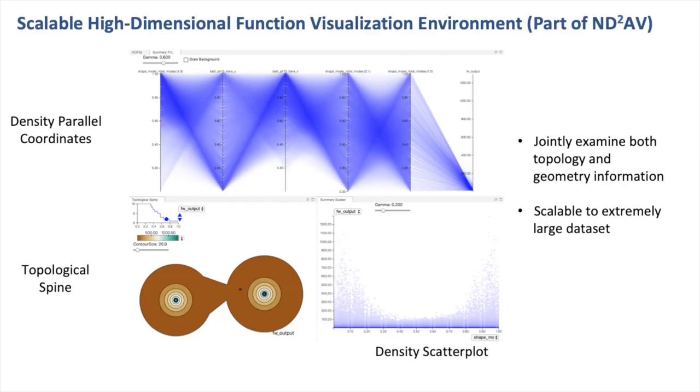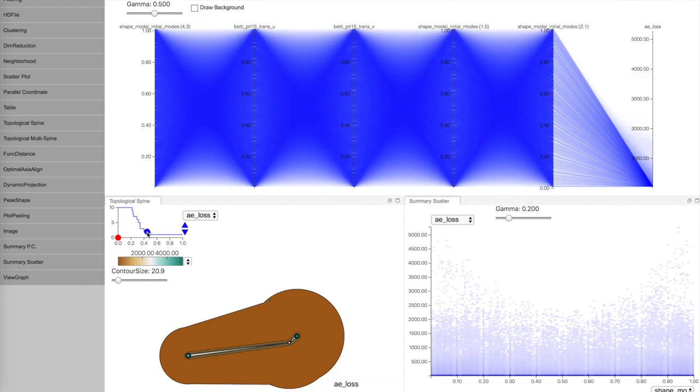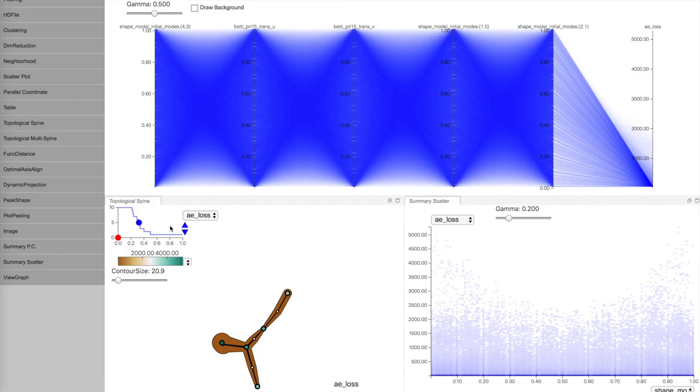In the topospine view, the contour around extrema indicates the level set of the function. Similar to contour lines in topographic maps, users can explore topological features at different levels of granularity by adjusting the persistence threshold.